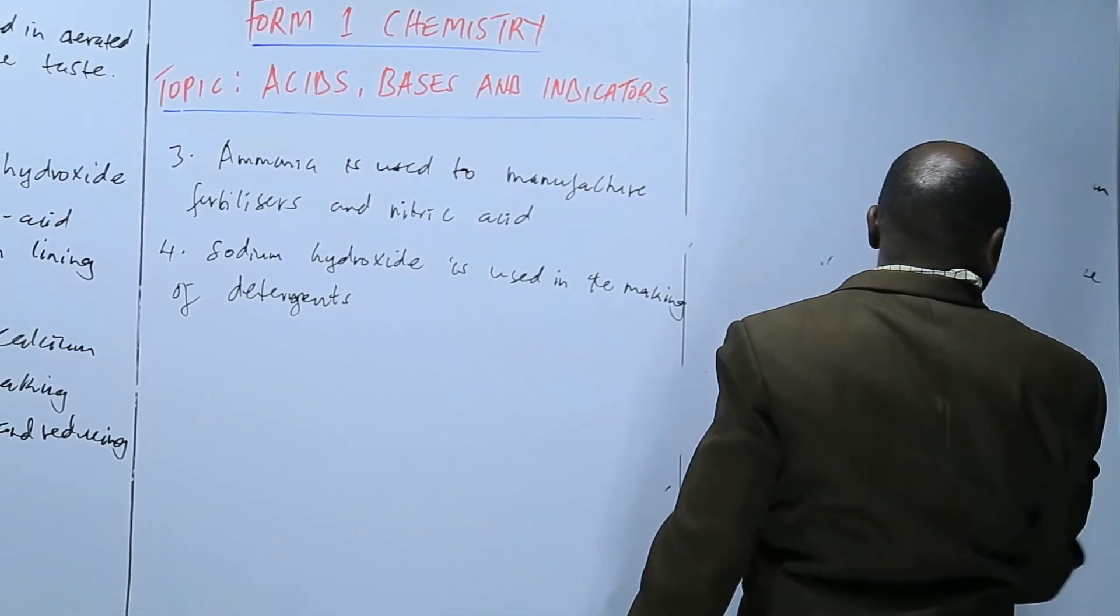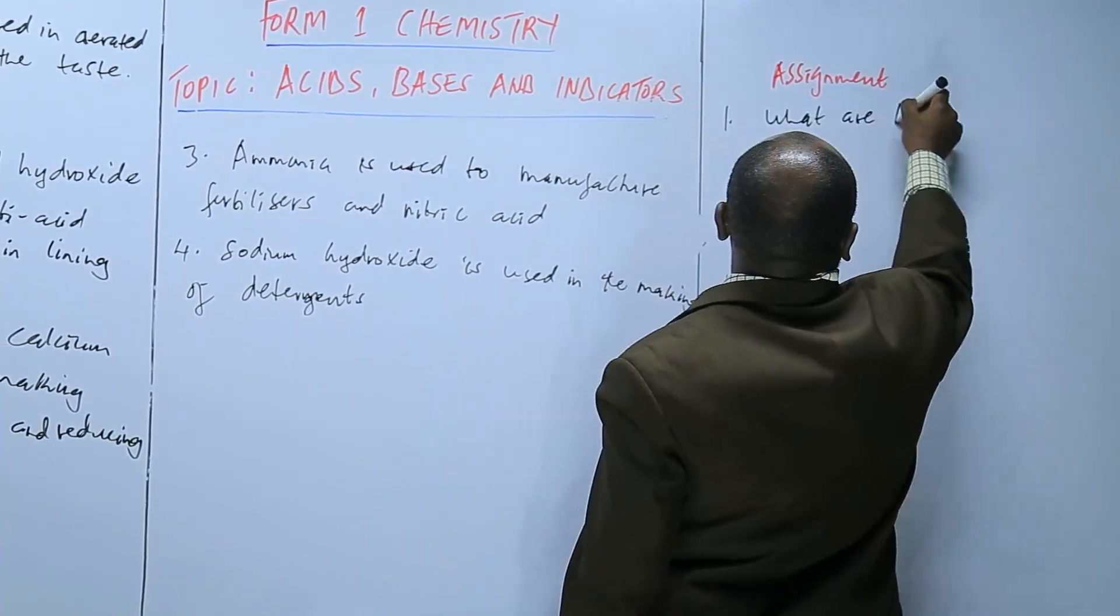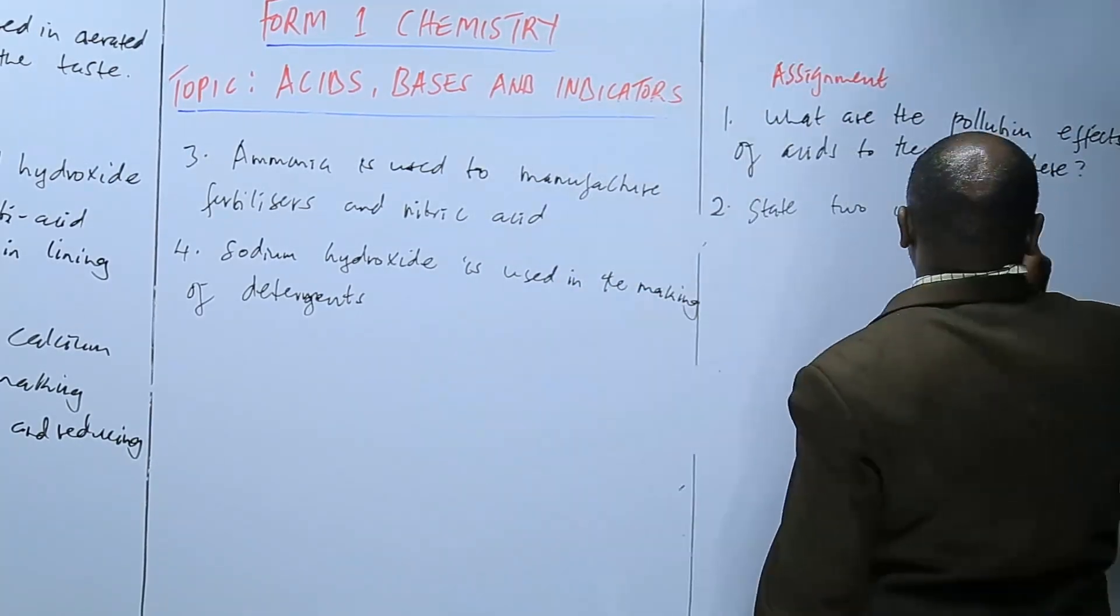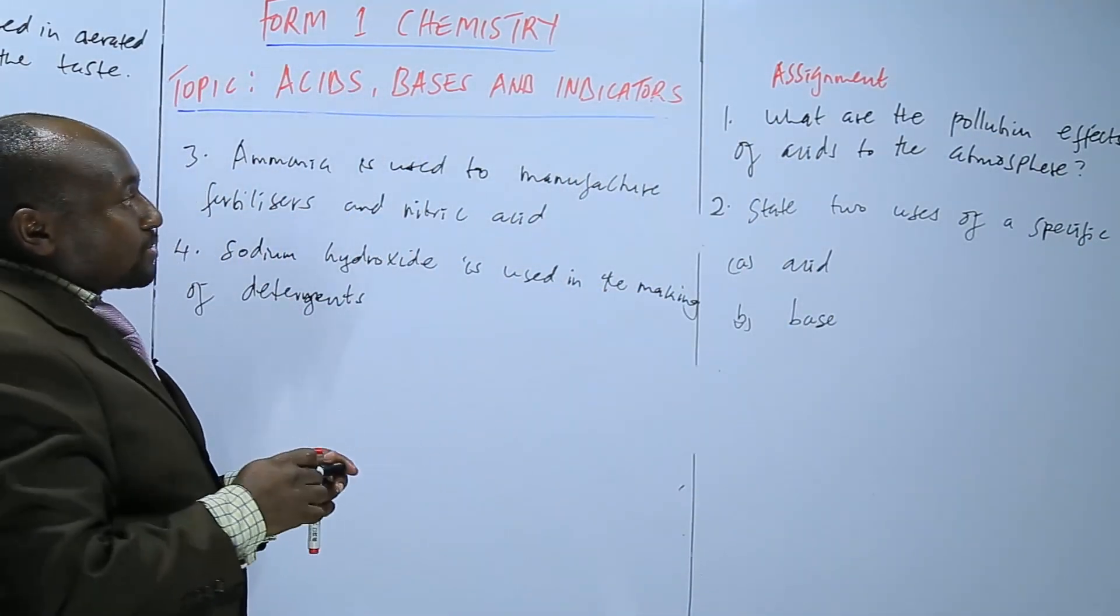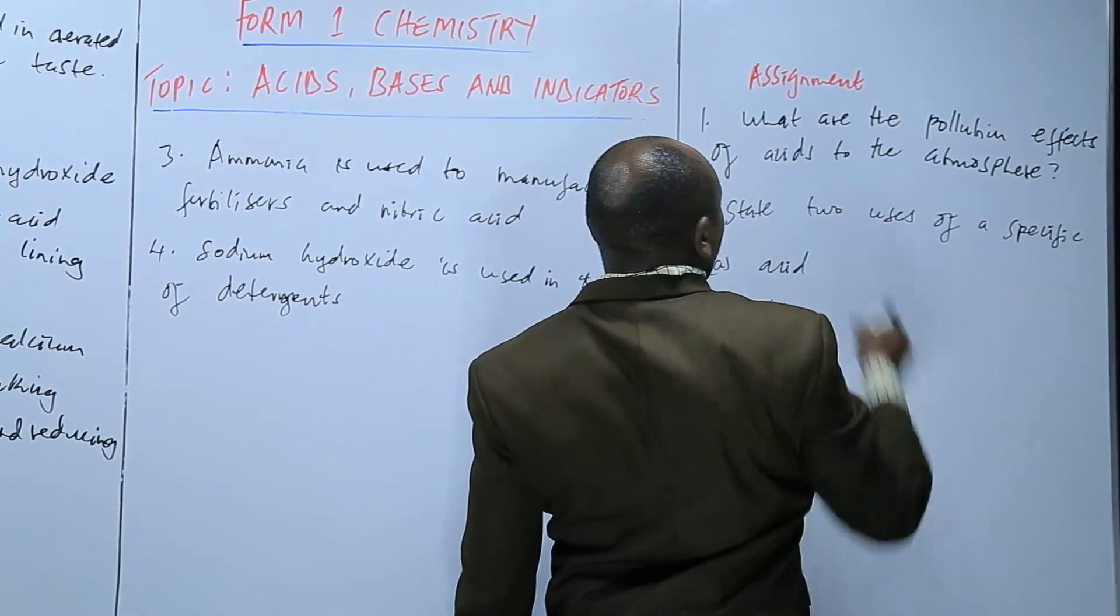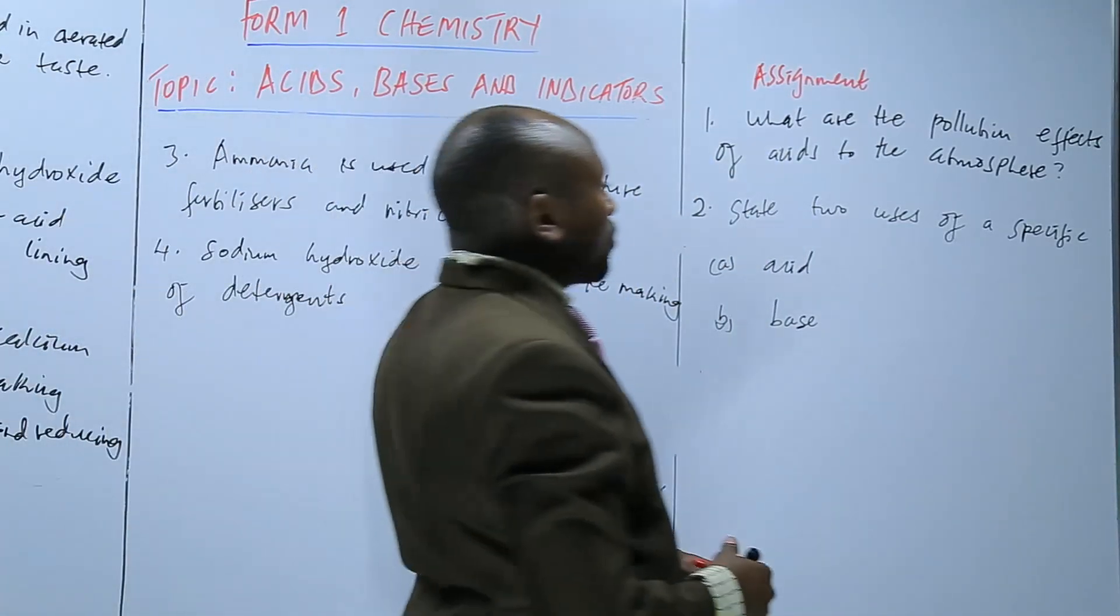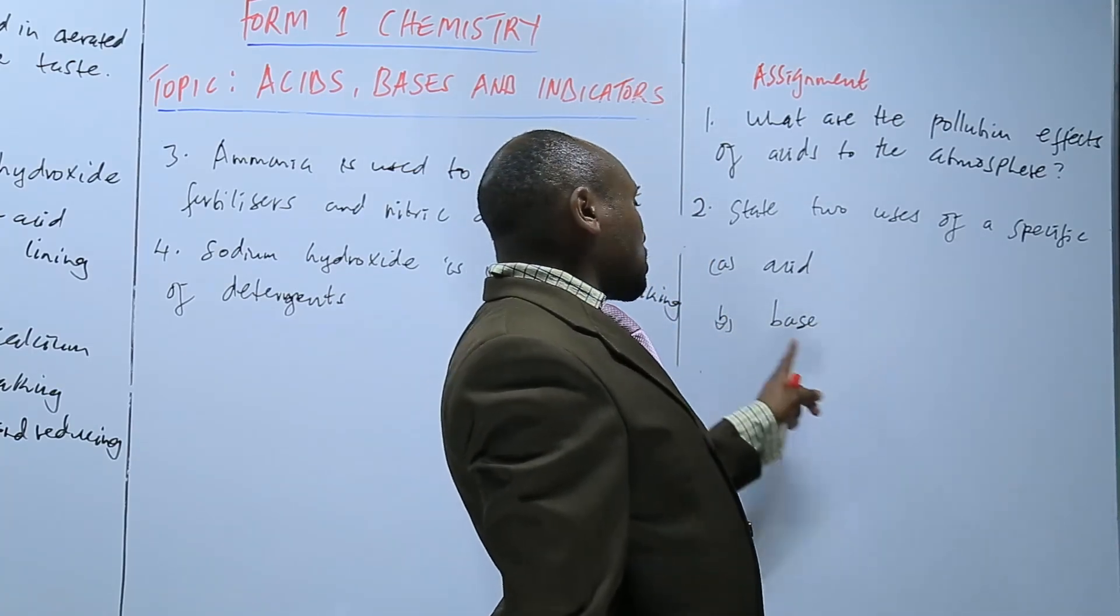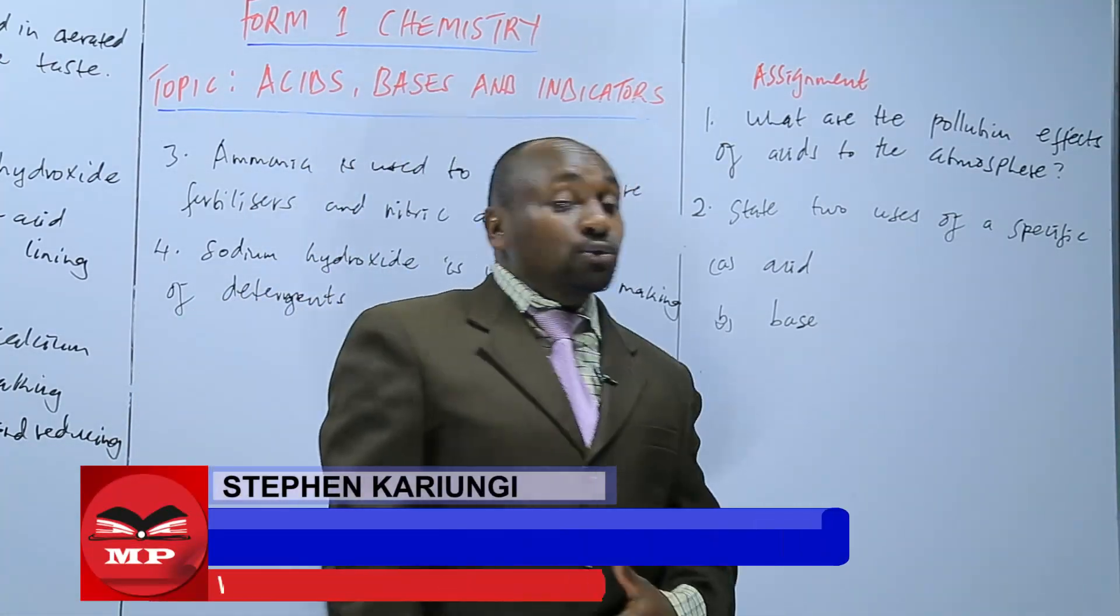So at that point we can have an assignment. The first question, what are the pollution effects of acids to the atmosphere? Or how do the acids affect the atmosphere in terms of pollution? Number two, state two uses of a specific acid. You specify the acid plus its use. And B, you specify the base and its use. So we have come to the end of that topic.